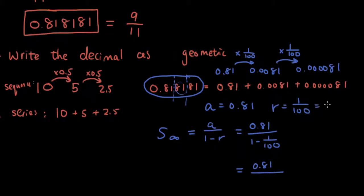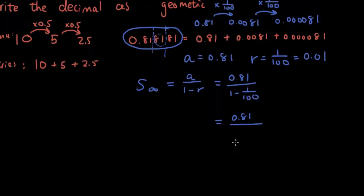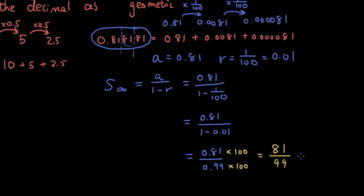So that gives you 0.81 over—1 over 100 is 0.01 as you probably already know, because 1 over 100 is 1% which is 0.01—so 1 minus 0.01. So that gives you 0.81 over 0.99. And if you multiply both the top and the bottom of the fraction by 100, which you are allowed to do with fractions, it becomes 81 over 99. 81 over 99, now we are nearly done.